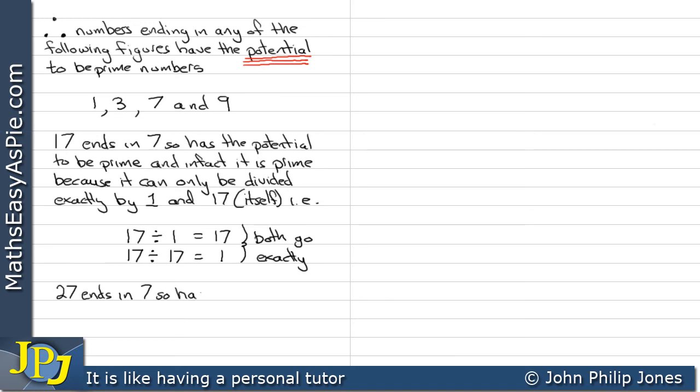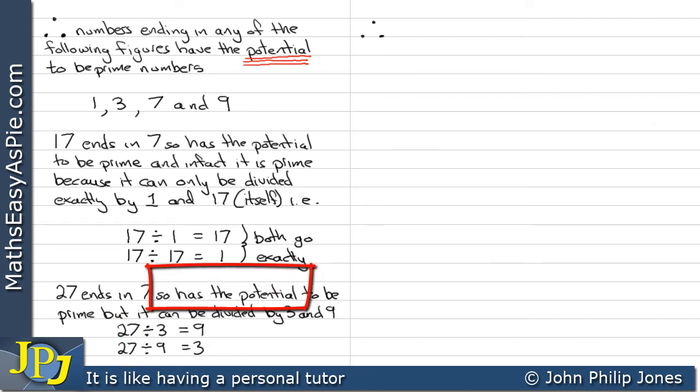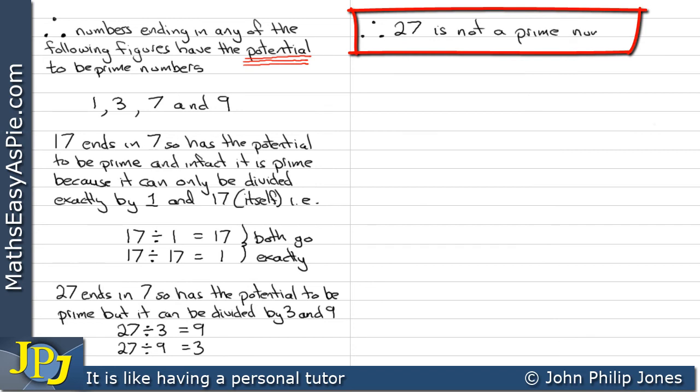27 also ends in 7, so has the potential to be prime. But it can be divided by 3 and 9, as shown here. Therefore, 27 is not a prime number.